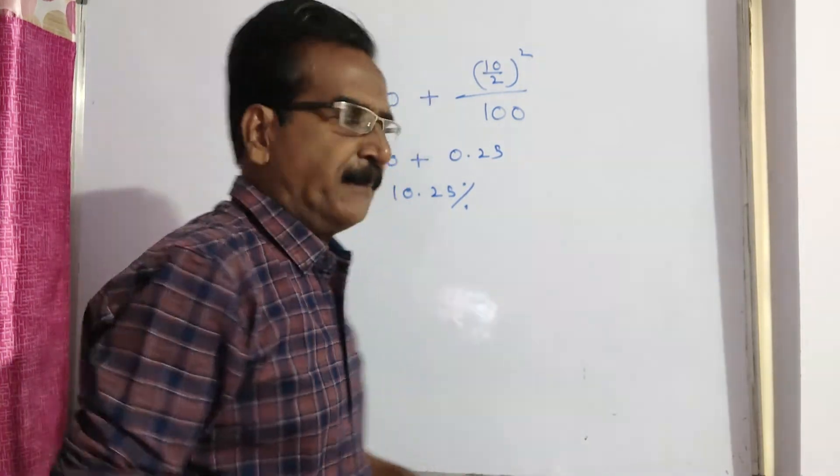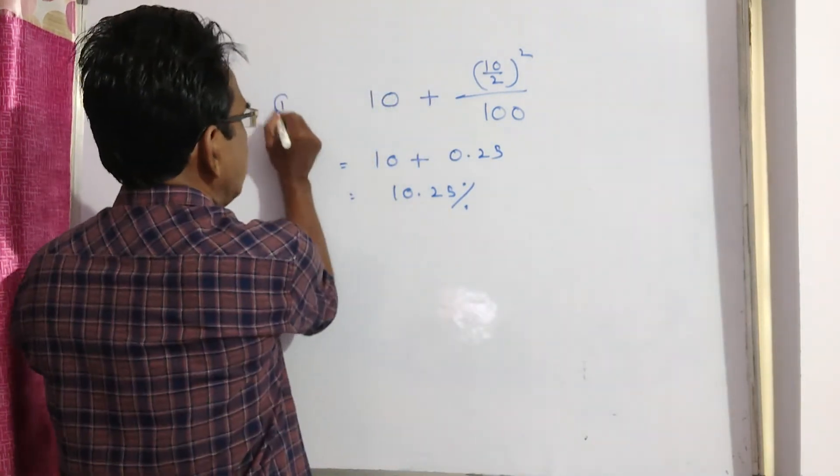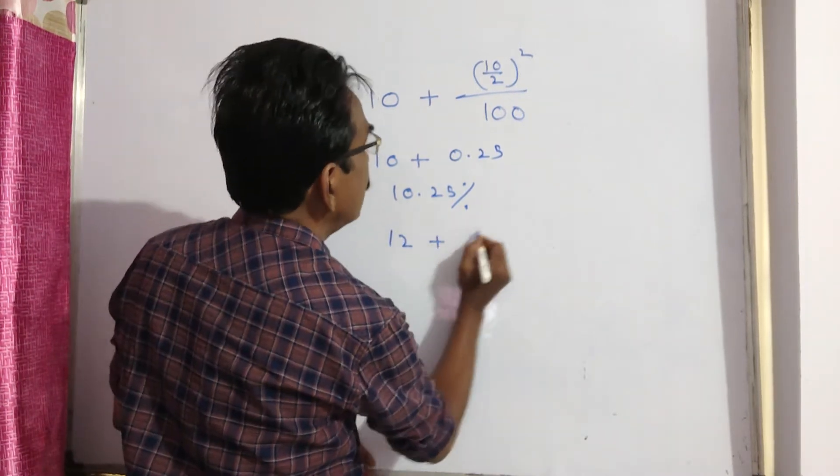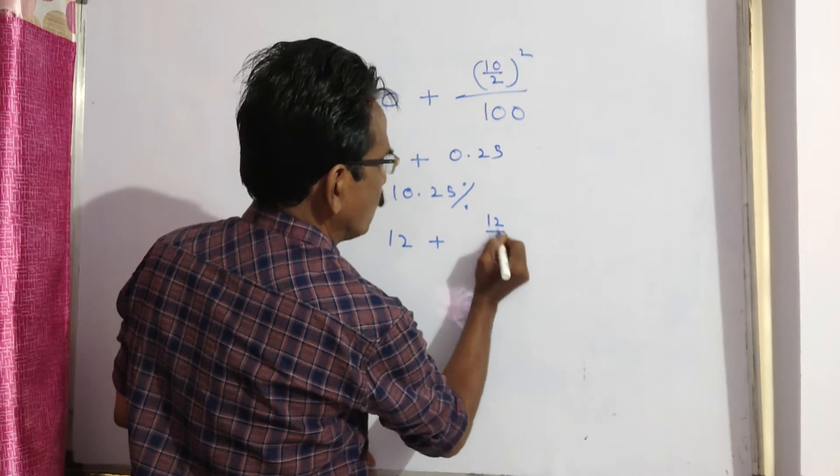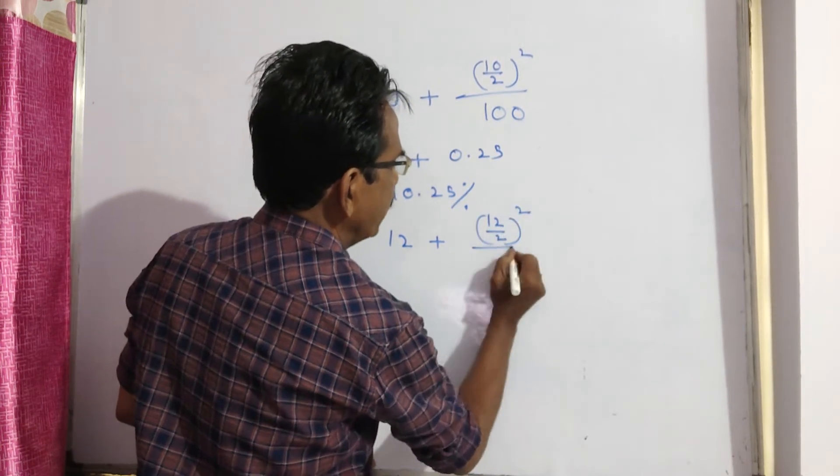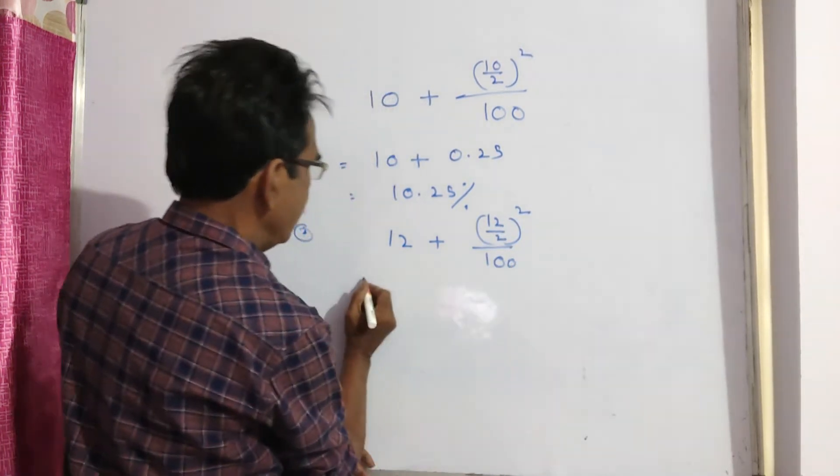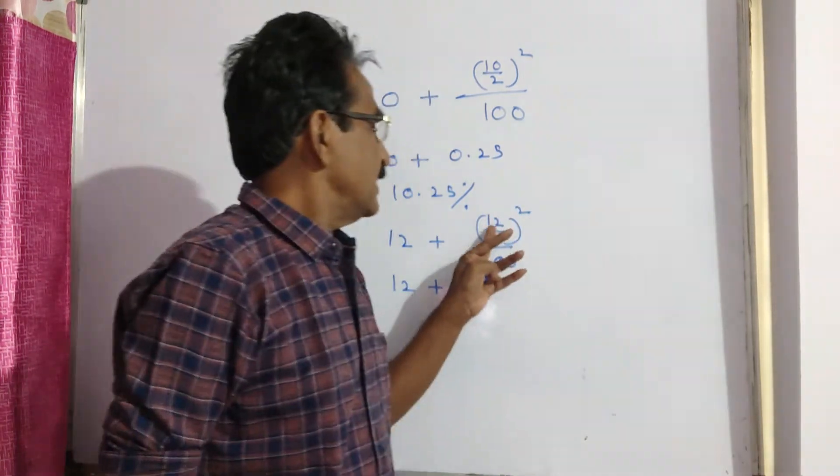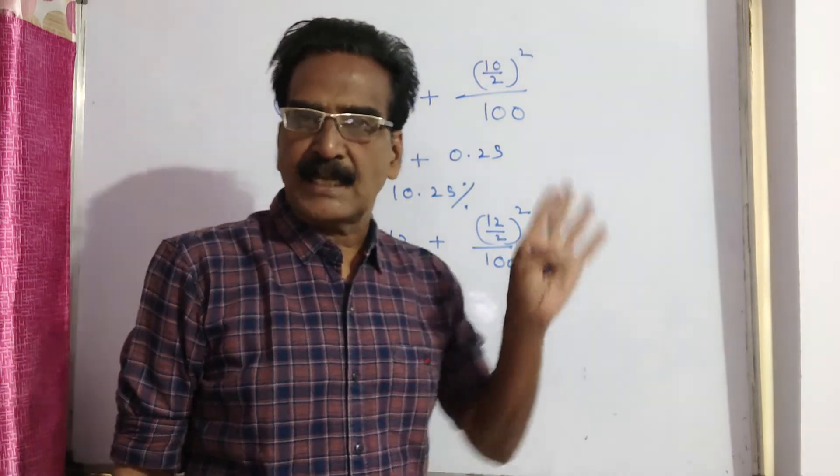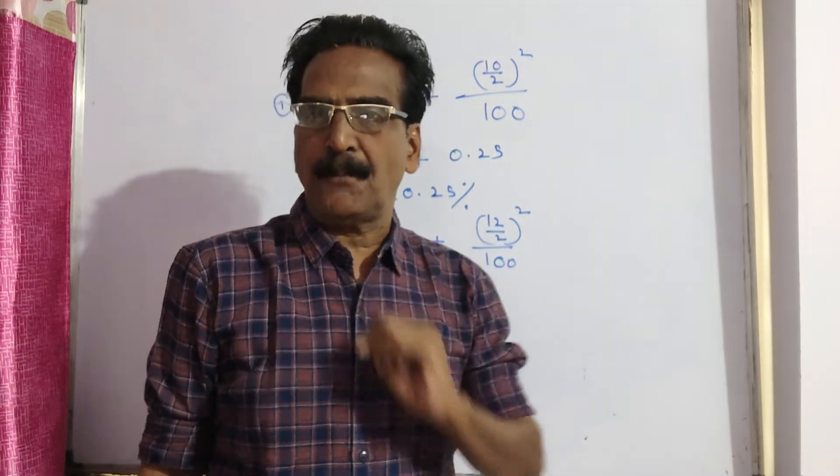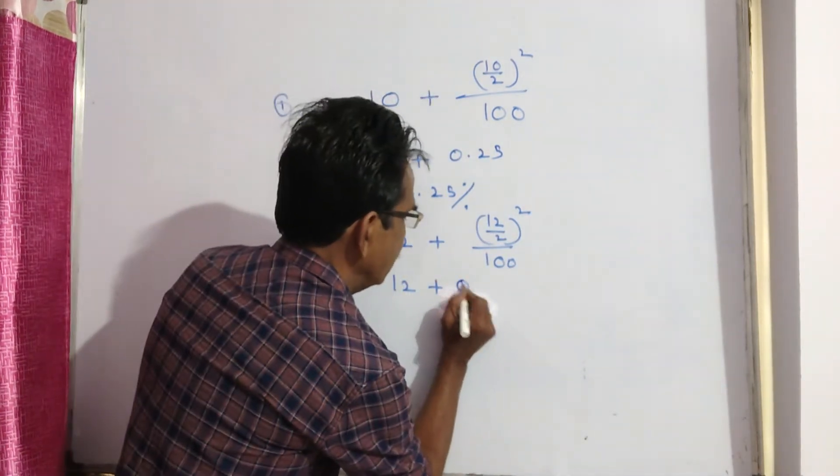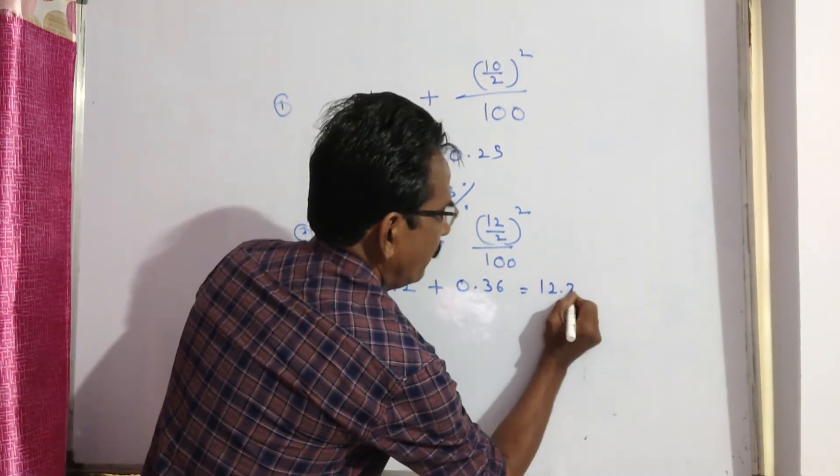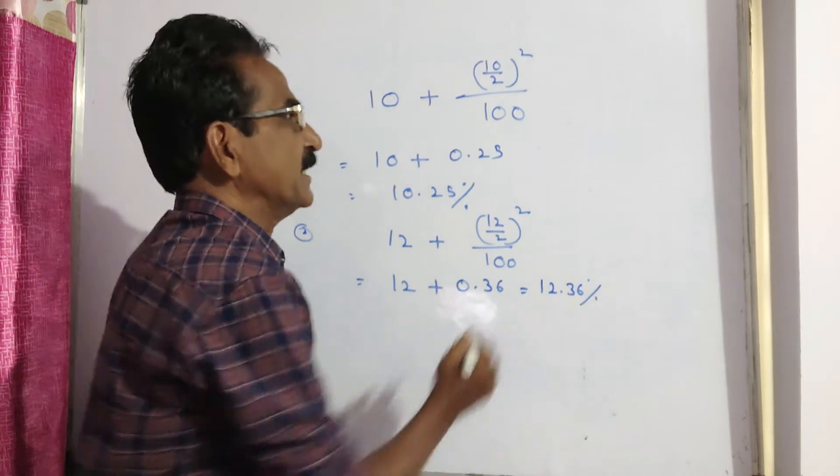So 12 plus 12 by 2 whole square by 100. This equals 12 plus 12 by 2, which is 6, 6 square is 36, 36 by 100 means 0.36. So effective rate of interest is 12.36 percent.